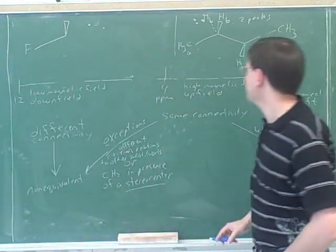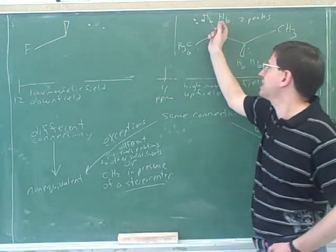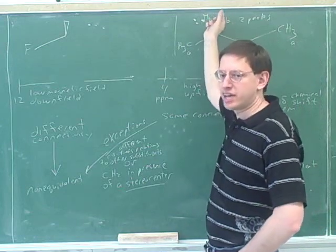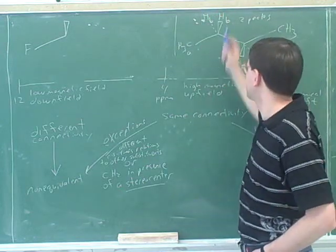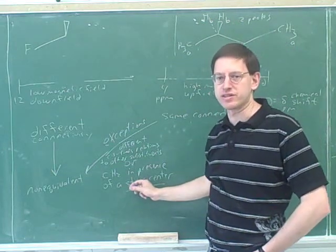One lesson here is just because hydrogens are drawn on wedges and dashes doesn't mean they're non-equivalent. Just because they're on wedges and dashes doesn't mean they're non-equivalent. It all depends on whether there's another stereocenter someplace else in the molecule.